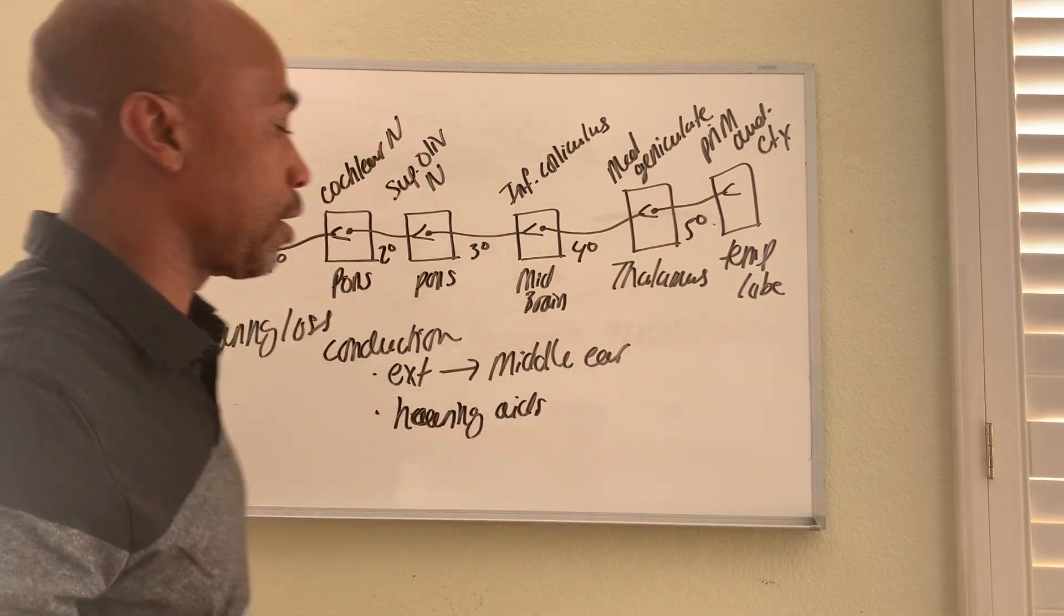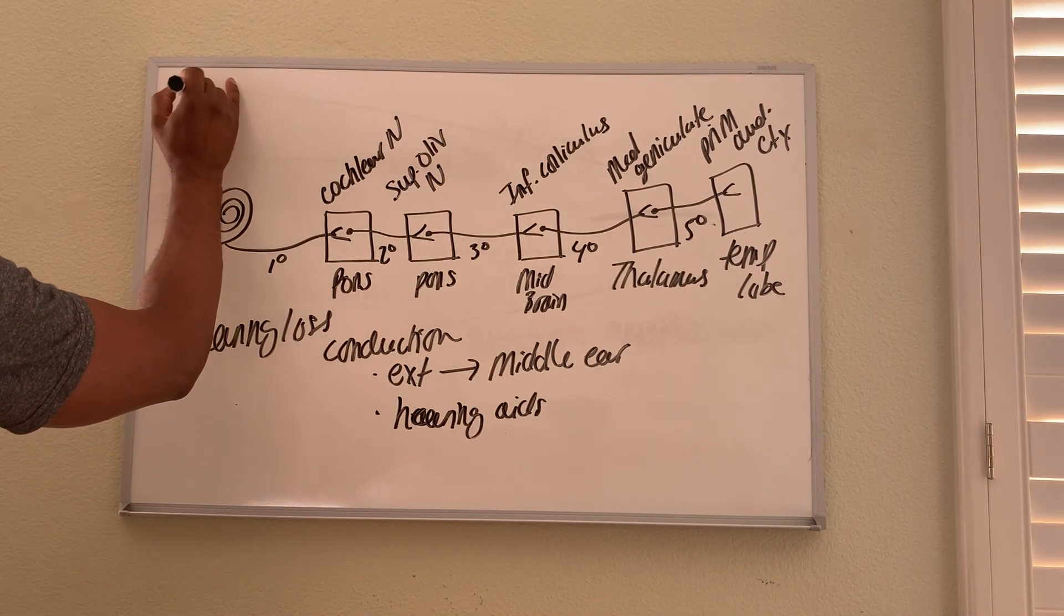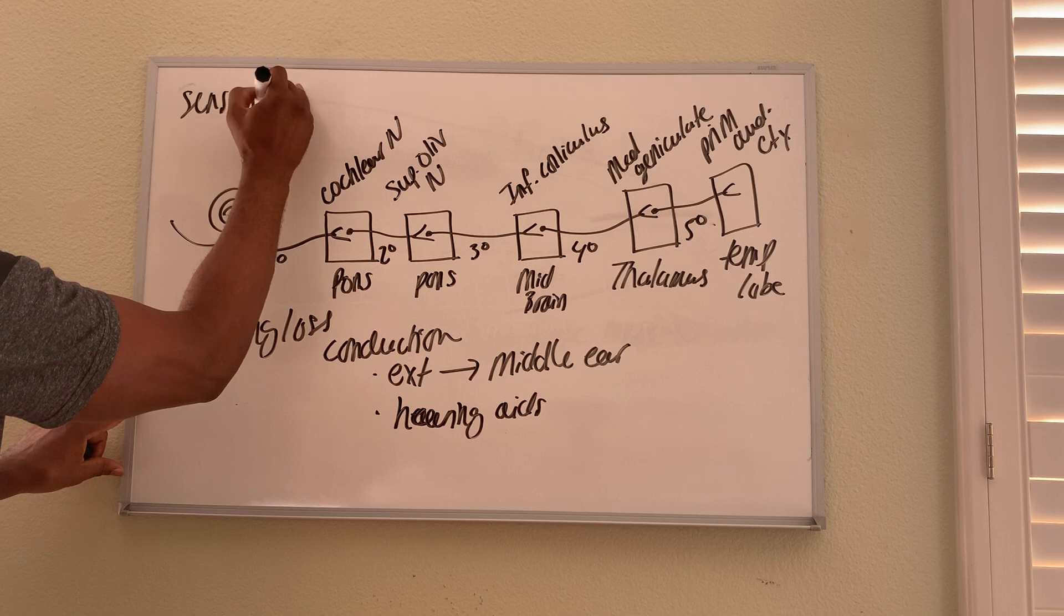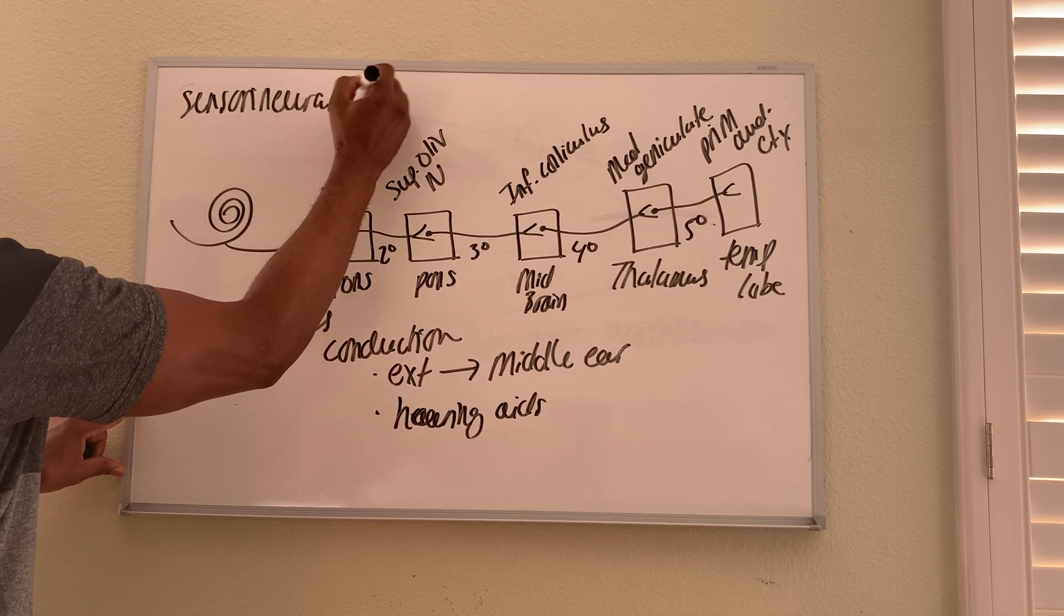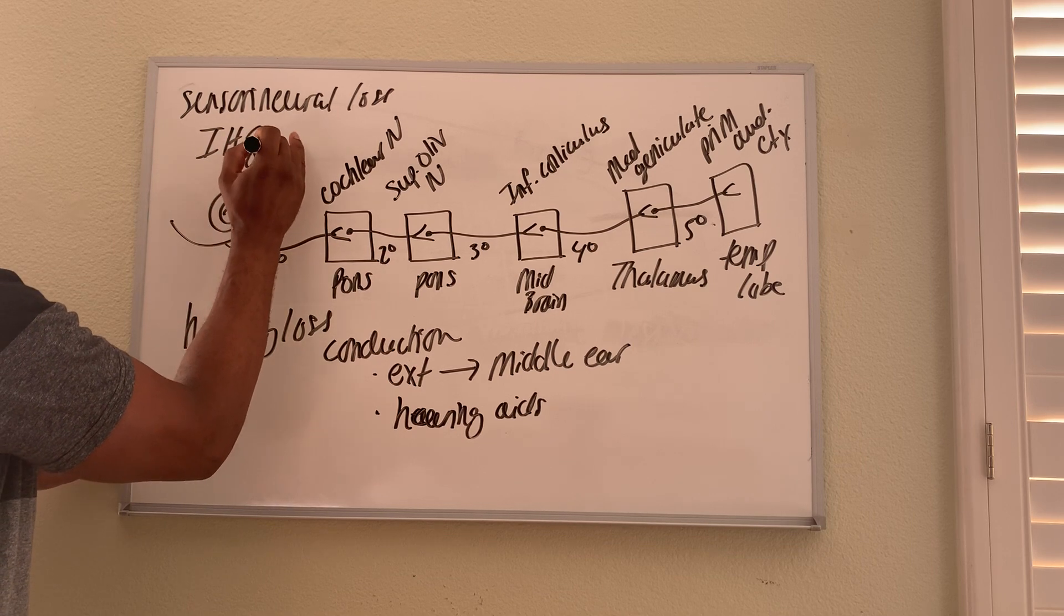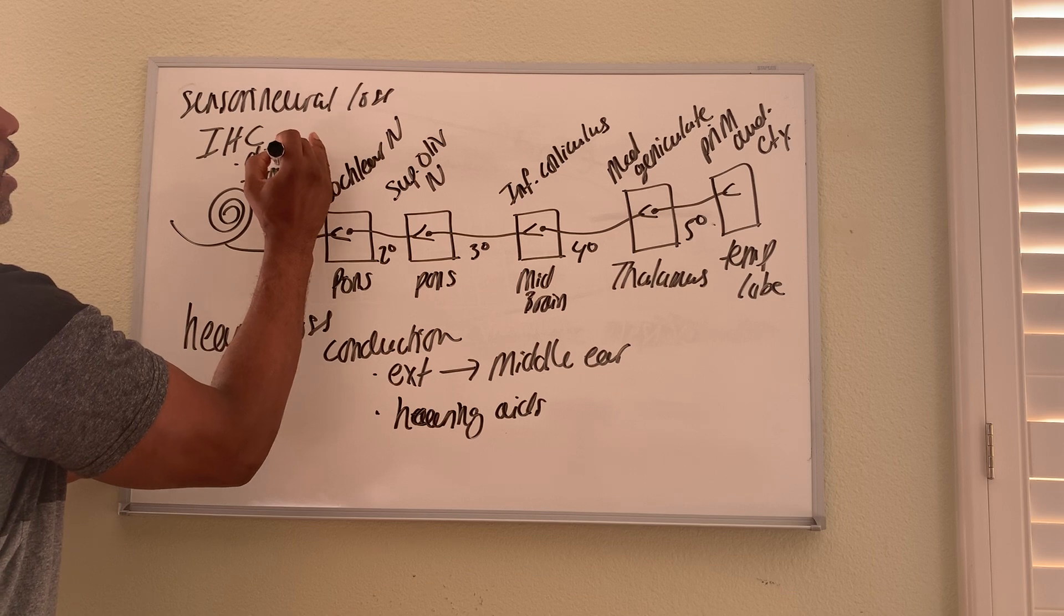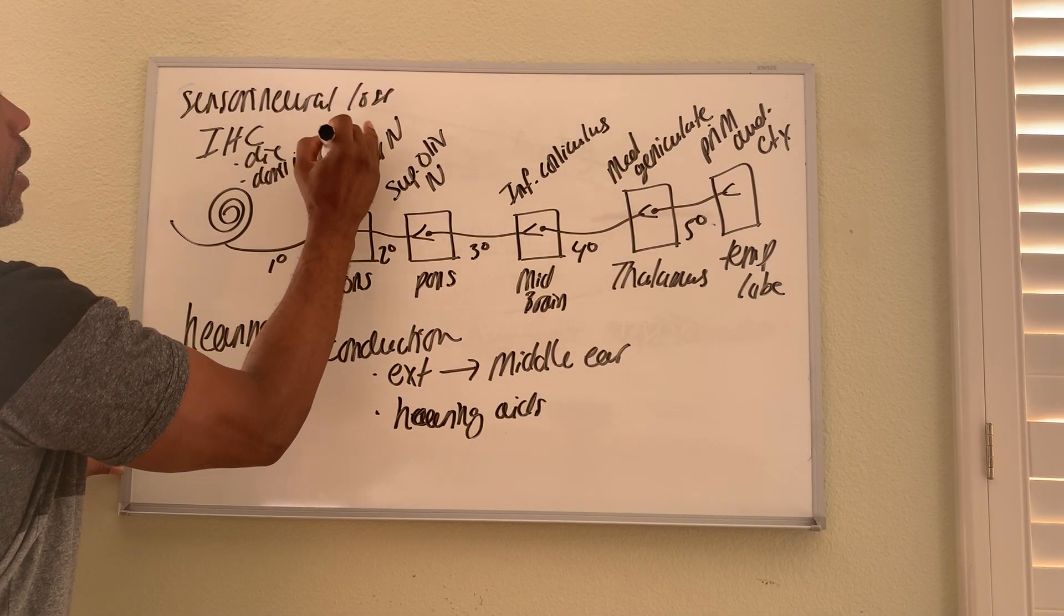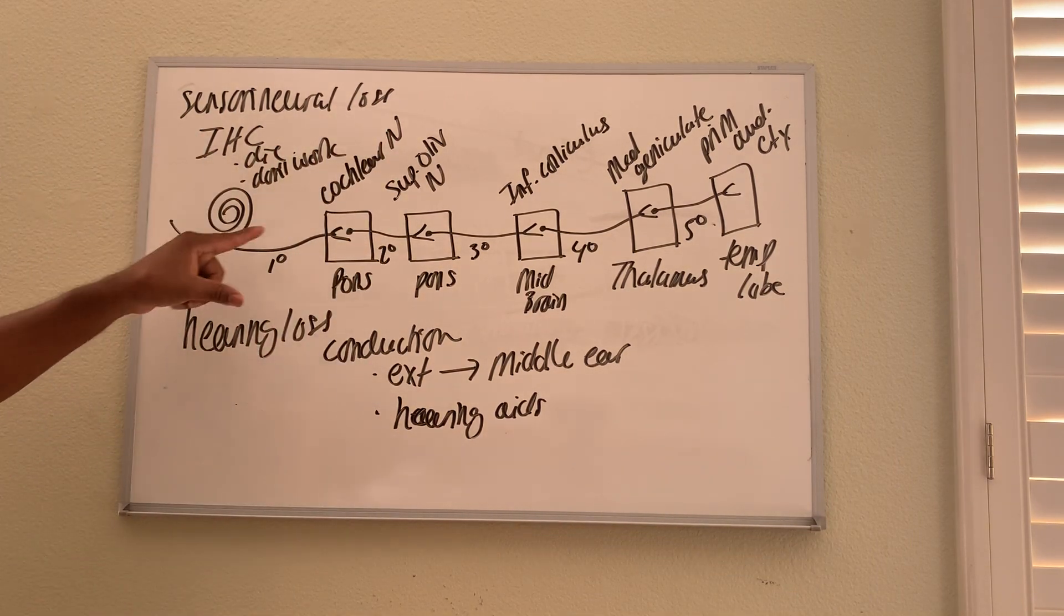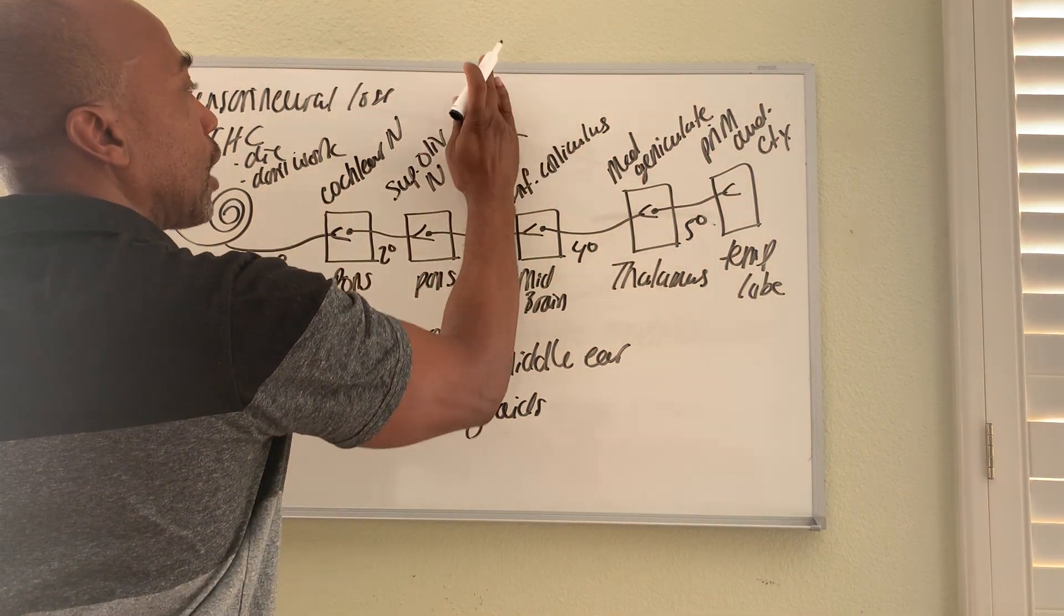Another form of hearing loss is called your sensorineural loss. Here your inner hair cells die or just don't work. And therefore when these cells don't work, when these inner hair cells stop working, then there's no activity in the neuron and so you can't hear.